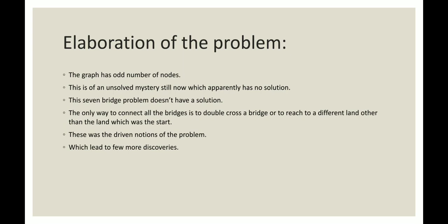This was an unsolved mystery at the time. This seven bridge problem does not have a solution at all. So the only solution was that the only way to connect all the bridges is to double cross a bridge or to reach to a different land other than the land which was the start. So these were the conclusion of the seven bridge problem.